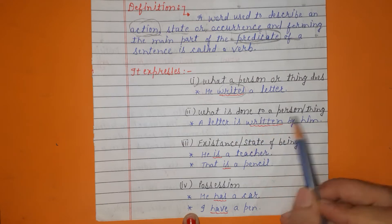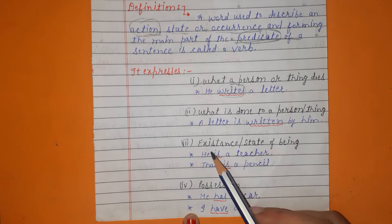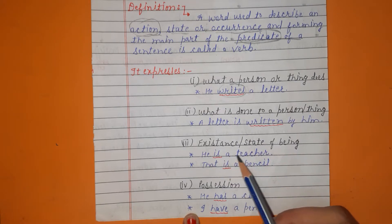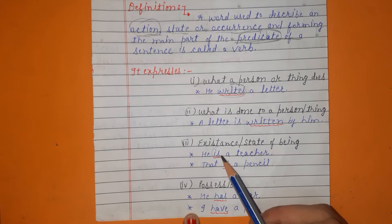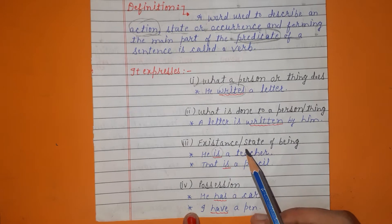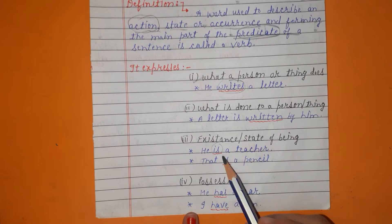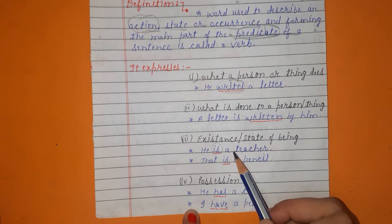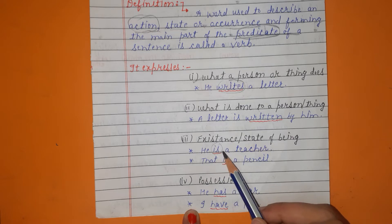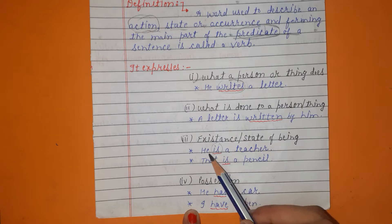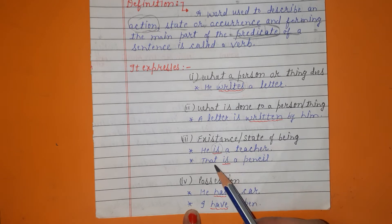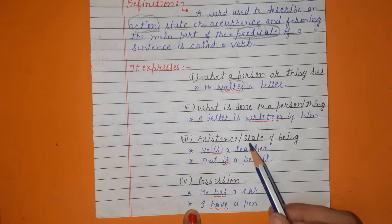Third is existence and state of being — example: 'He is a teacher.' Here 'is' is a verb. Some students get confused that 'is' is a helping verb, but in this sentence 'is' is working as a main verb. It is showing the existence — 'that is a pencil' — state of being.